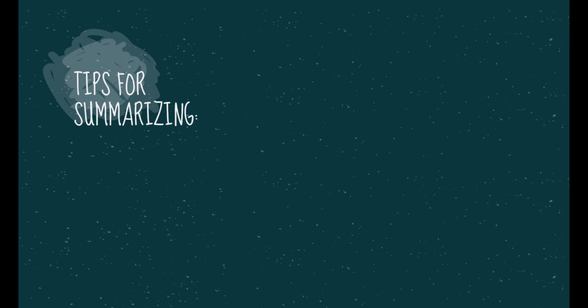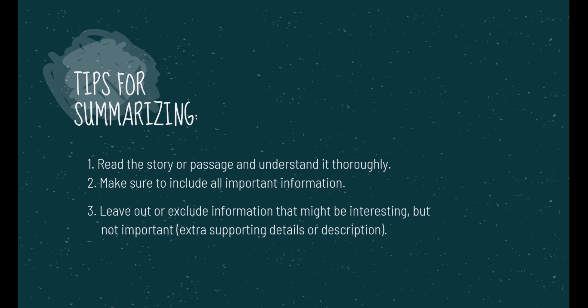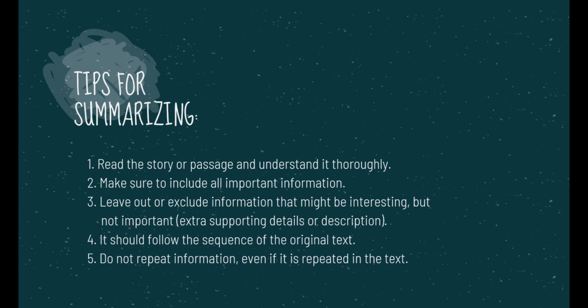Here are some tips for summarizing. Number 1: Read a story or passage and understand it thoroughly. Number 2: Make sure to include all important information. Number 3: Leave out or exclude information that might be interesting but not important. Number 4: It should follow the sequence of the original text. Number 5: Don't repeat information even if it's repeated in the text.